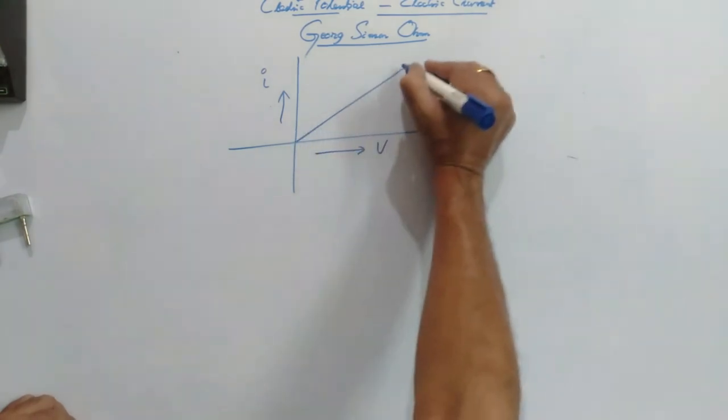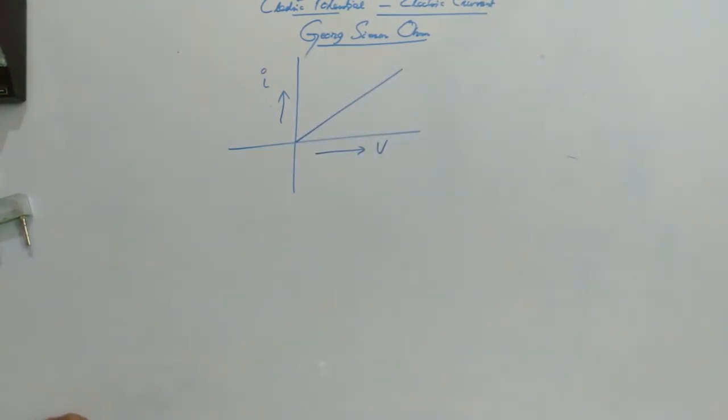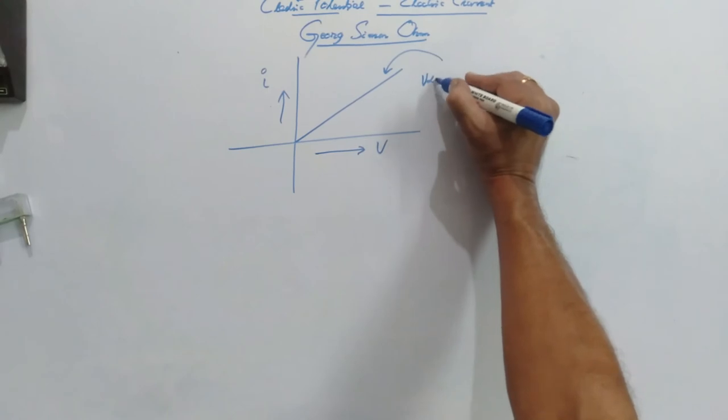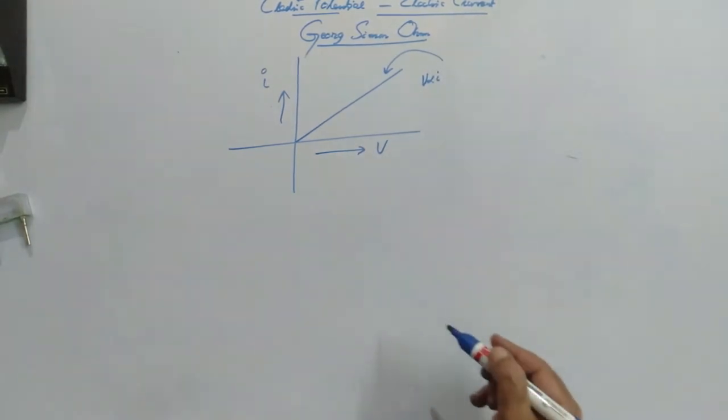then the graph obtained should be a straight line as the two V and I are in proportion with each other.